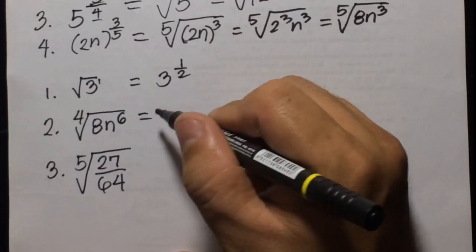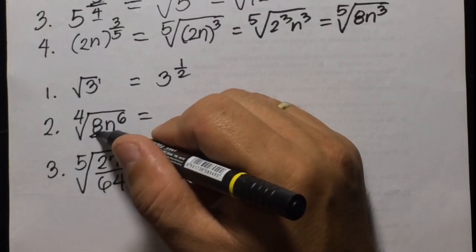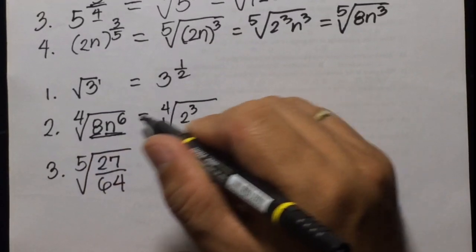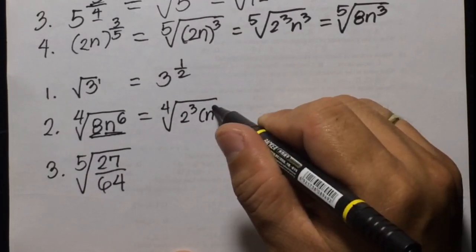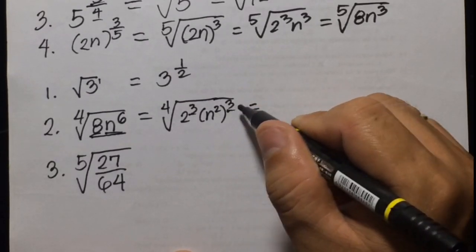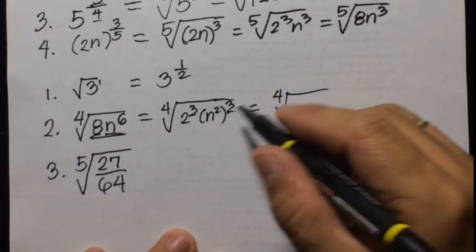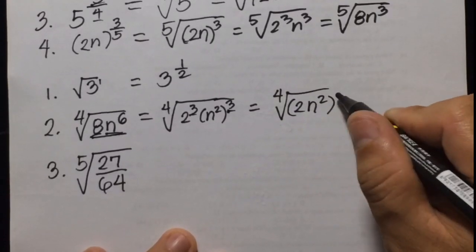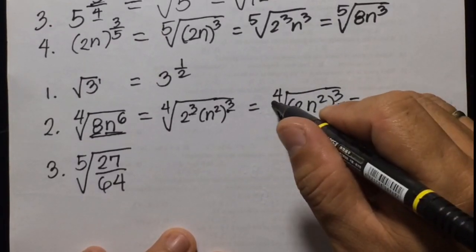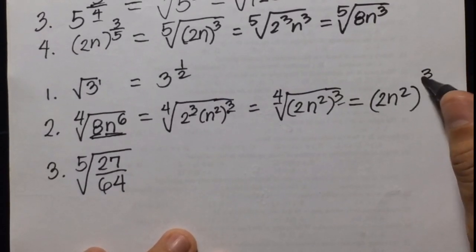Then the 4th root of 8n to the power of 6. We rewrite 8 as 2 cubed and n to the power of 6 as n squared cubed, so they share the same exponent of 3. This gives us the 4th root of (2n squared) cubed. Rewriting in exponential form, this is 2n squared raised to the power of 3 over 4.